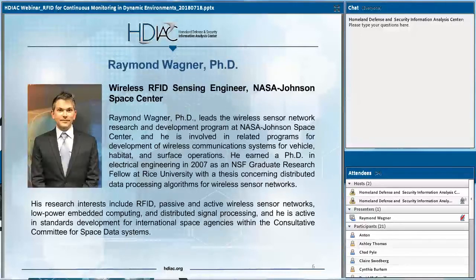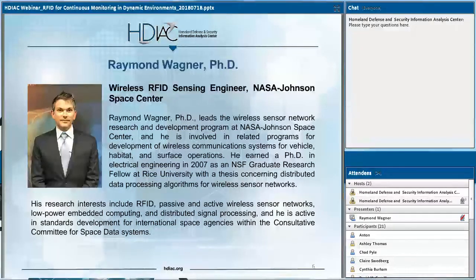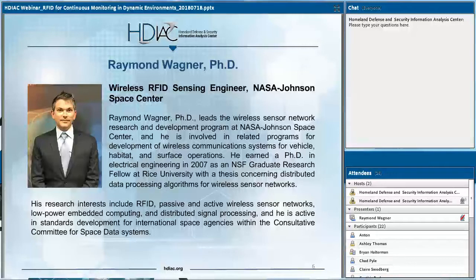Dr. Ray Wagner leads the wireless sensor network research and development program at NASA Johnson Space Center, where he works on wireless communication systems designed for vehicle, human habitat, and surface operations. His research interests also include low power embedded computing and distributed signal processing. He received his PhD in electrical engineering from Rice University in 2007.